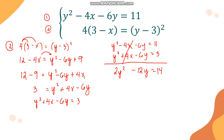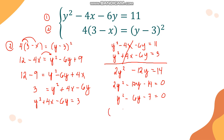Moving all terms to one side: 2y squared minus 12y minus 14 equals 0. Dividing through by 2: y squared minus 6y minus 7 equals 0. This trinomial is factorable — we need factors of negative 7 that add to negative 6, which are negative 7 and positive 1.